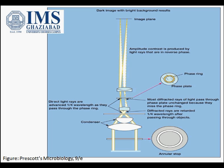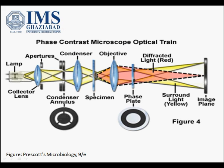The background formed by the undeviated light is bright while the object is dark and well defined. A second figure shows the same concept: the condenser with the annular stopper produces a hollow cone of light. There are two rays — the diffracted one passing through the specimen, and the undeviated direct one. Because of the phase plate, the undeviated light is advanced by 1/4 wavelength, giving a total difference of 1/2 wavelength, causing the two rays to cancel each other and form an image.